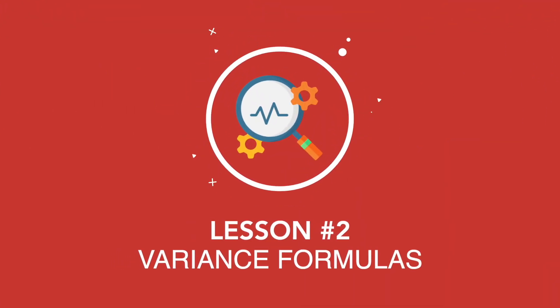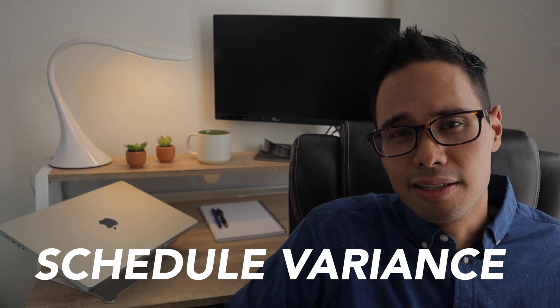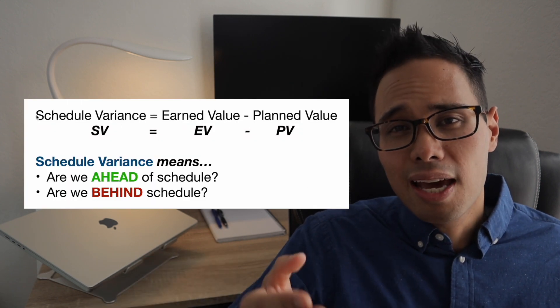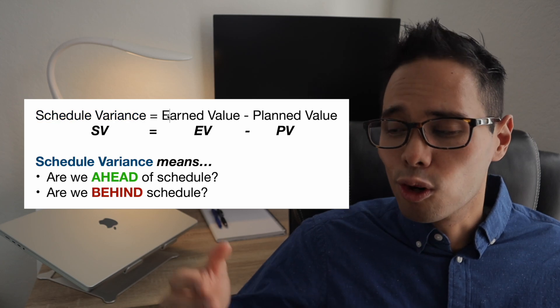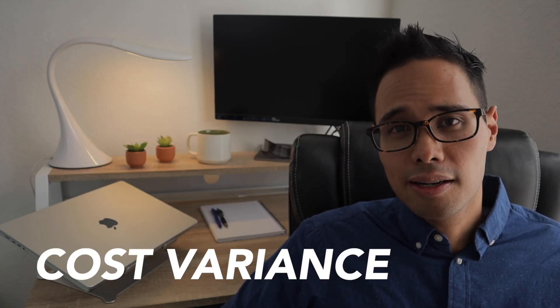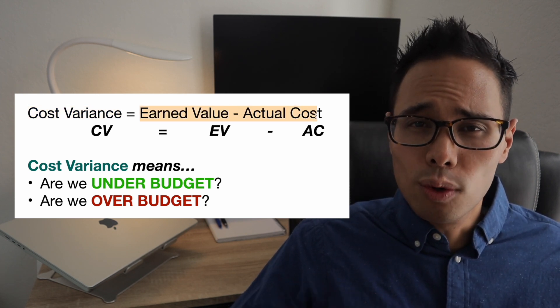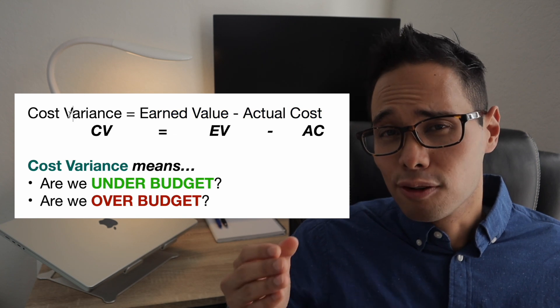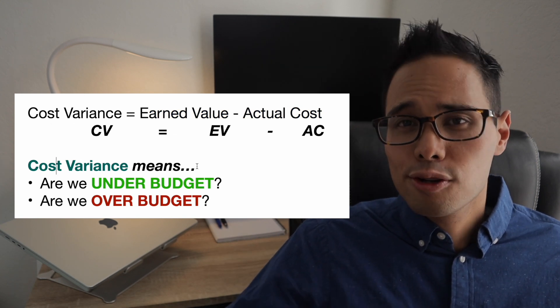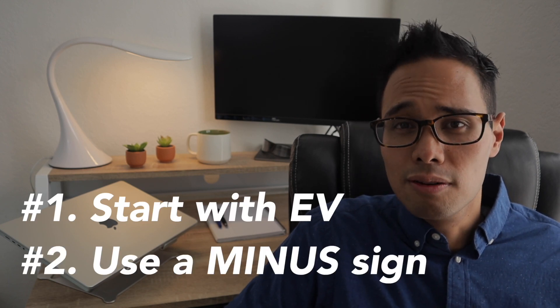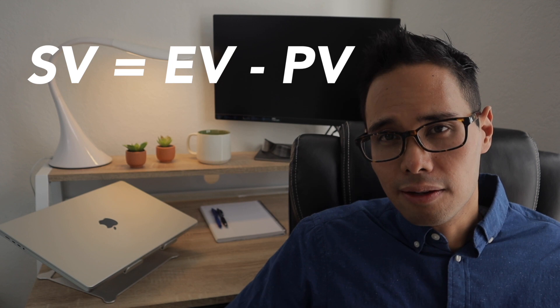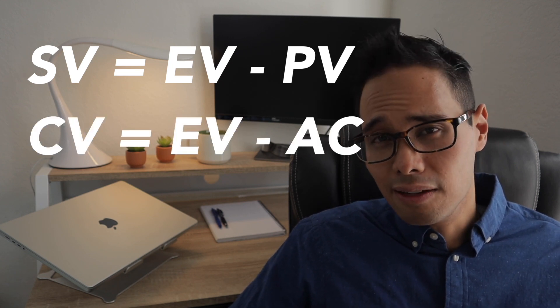Let's go through the first group of formulas associated with cost and schedule variance. Schedule variance is the difference between earned value and planned value, and it tells you whether your project is ahead of or behind schedule. Cost variance is the difference between earned value and actual cost — what's the difference between what you expected to spend versus what you actually spent. The easy way to remember these formulas is that both start with EV and both involve a minus sign: SV = EV − PV and CV = EV − AC.